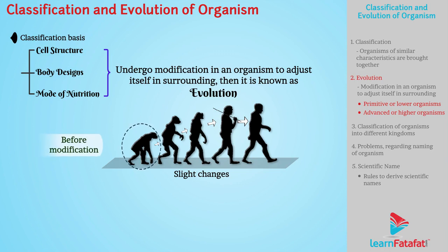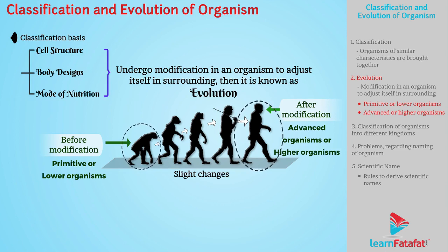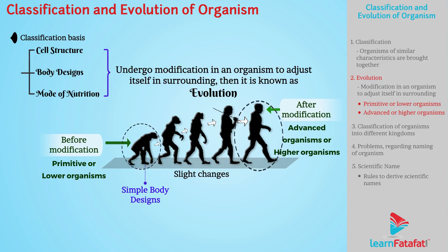Organisms before modification are known as primitive or lower organisms, and modified organisms are known as advanced or higher organisms. Lower organisms show simple body designs as compared to higher organisms.